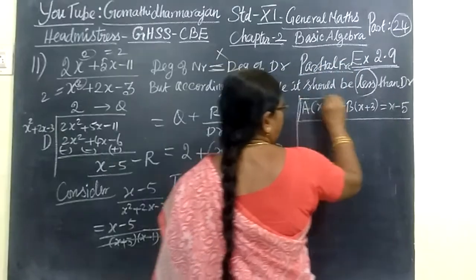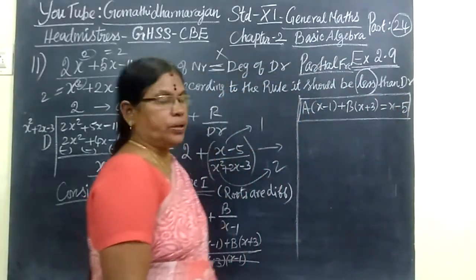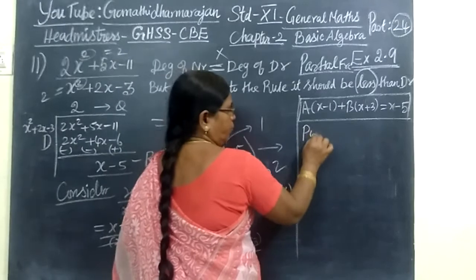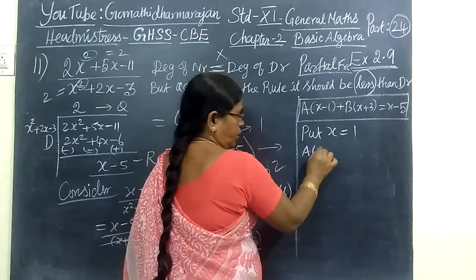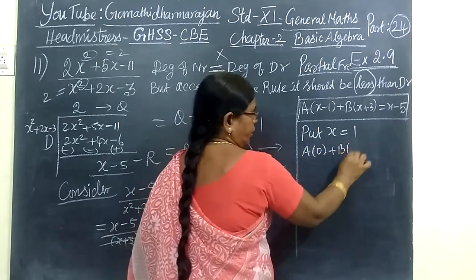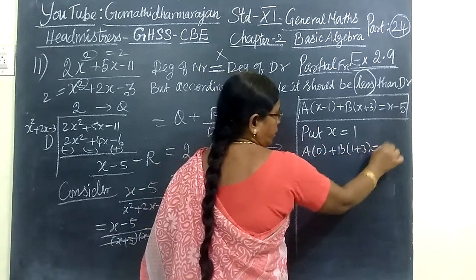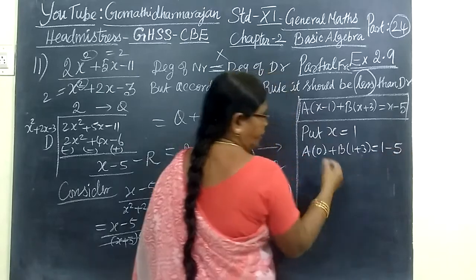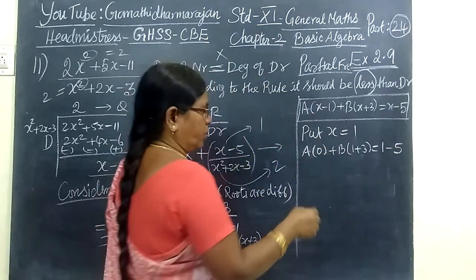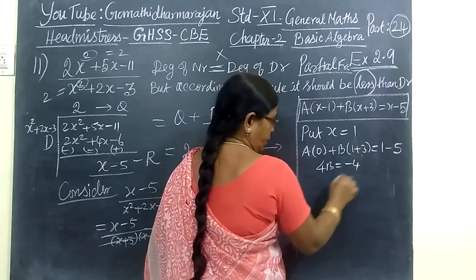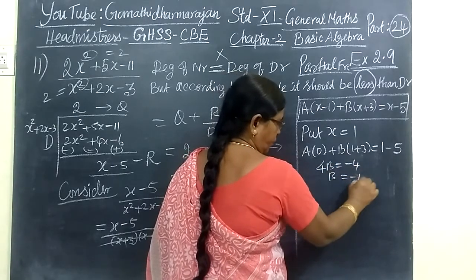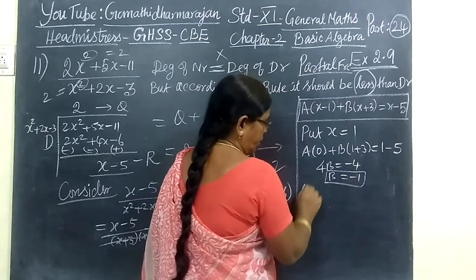You put X equal to 1. So this is totally 0. Then B bracket 1 plus 3 equal to 1 minus 5. Wherever X comes you are writing 1. So this is 4B equal to minus 4. This implies B equal to minus 1.